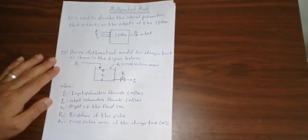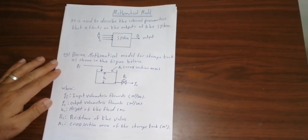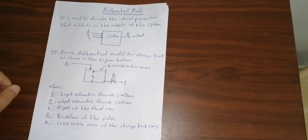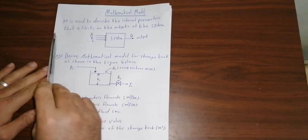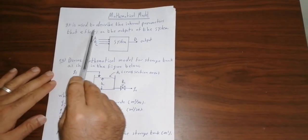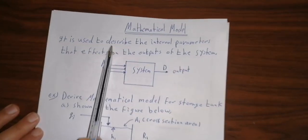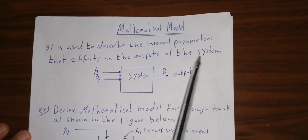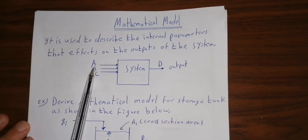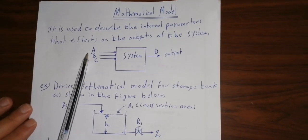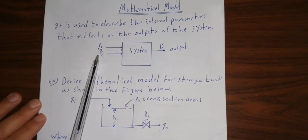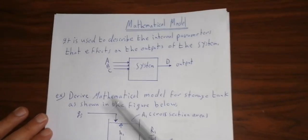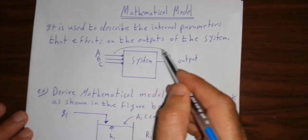Assalamu alaikum and very good day to all of you. Now we will speak about mathematical model. As we see here, it is the definition of mathematical model. It is used to describe the internal parameters that affect the outputs of the system. Like here, the input parameters — for example, the three inputs a, b, c — affect the output d.